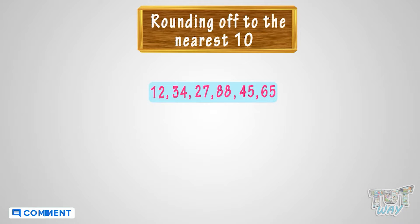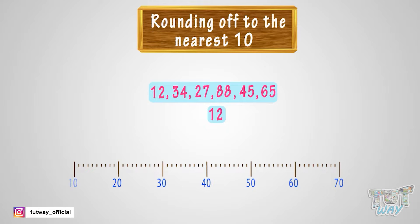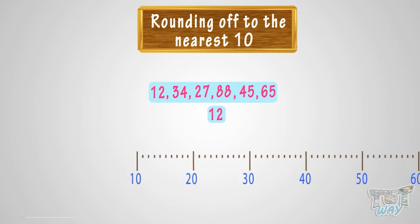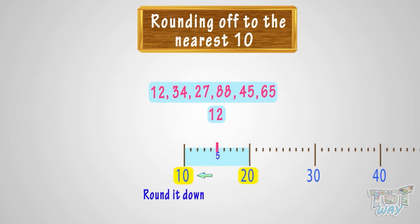Let's start with 12. See the number line. Where can you fit 12 on this number line? It is somewhere between 10 and 20. Whenever you want to round a number, there are always two options. Either we can round it down to 10 or round it up to 20. Think, which option do you think is more apt?